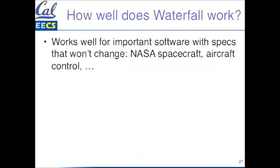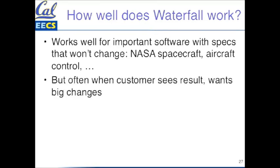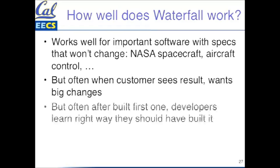How well does it work? It really works well for things that don't change fast — NASA spacecraft, aircraft control software in a 747. You really want very tight specs that aren't going to change. On the other hand, a lot of the software we use is customer-facing. If you talk to customers about what they want, build it out, and deliver it, they'll often say 'that's not what I want.' And for developers, they go through all these phases and once it's done, they realize — now I know how to build it.